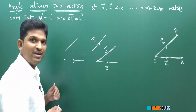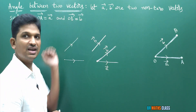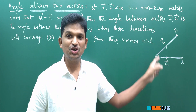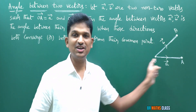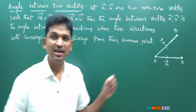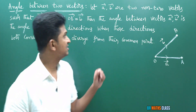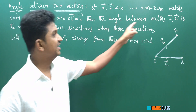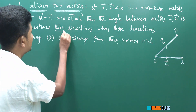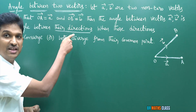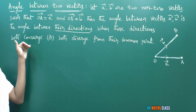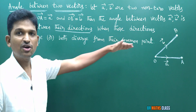So what I am trying to say: if vectors are like this, then also the angle between them is defined. I consider two non-zero vectors a-bar, b-bar such that OA-bar equals a-bar and OB-bar equals b-bar. Then the angle between these two vectors is defined. The angle between the vectors a-bar, b-bar is the angle between their directions when both directions converge or both diverge from their common point.